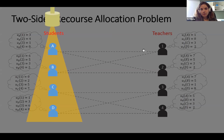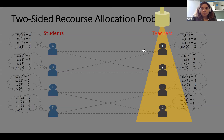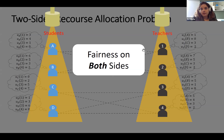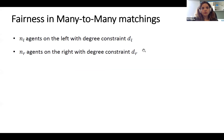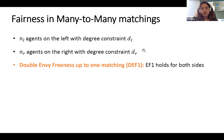More formally, we study fairness in many-to-many matchings where there are n_L agents on the left with degree constraint d_L, and n_R agents on the right with degree constraint d_R. In the student-teacher example, the degree constraint for students is the maximum number of courses each student can take, and for teachers it's the capacity of their class. We look for matchings that are Double EF1 (DEF1) — EF1 with respect to both sides.